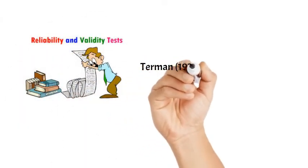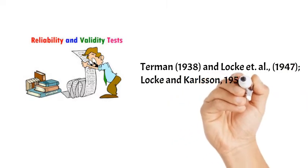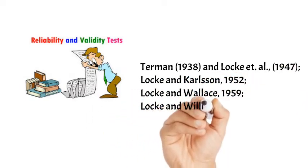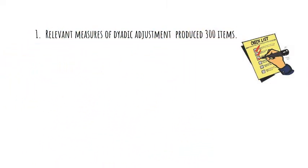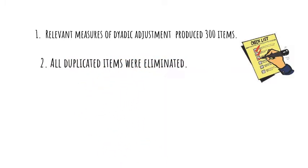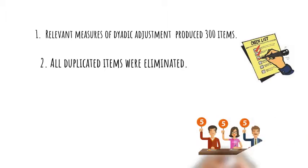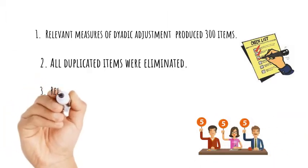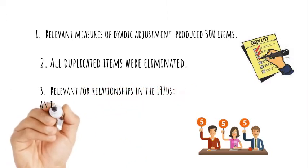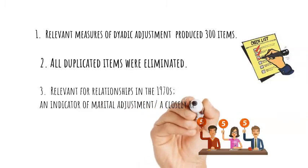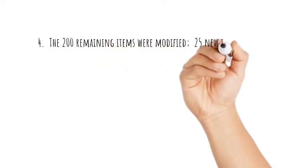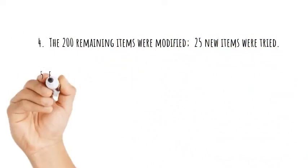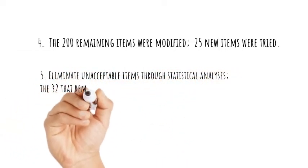The procedures used in the development of the Dyadic Adjustment Scale are extensions of those used by Locke and his colleagues and the developers of other marital adjustment scales. All items which could be located in any marital adjustment scale were identified, producing approximately 300 items. Duplicate items were eliminated, and three judges examined all remaining items. To be acceptable, an item had to be judged relevant for relationships in the 1970s and had to be an indicator of marital adjustment or a closely related concept. The 200 remaining items were modified where necessary, 25 new items were added, and statistical tests were used to eliminate unacceptable items, leaving the 32 that comprise the present scale.